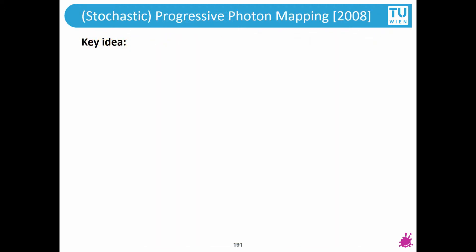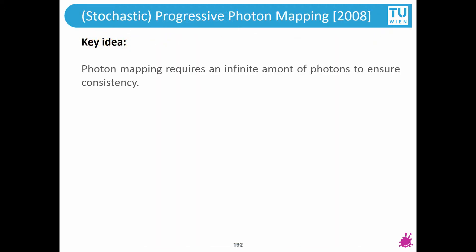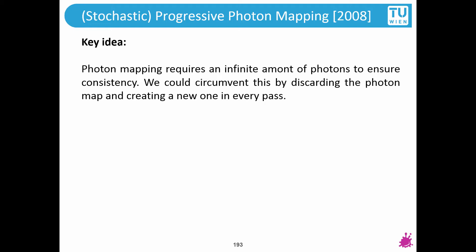Stochastic Progressive Photon Mapping — what is this about? You would need an infinite amount of photons to ensure consistency, but you cannot do that. What you can do is periodically generate a new photon map and use that, which means discarding previous samples and creating new ones.